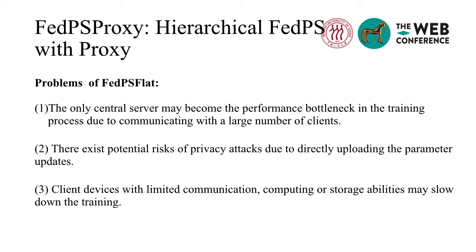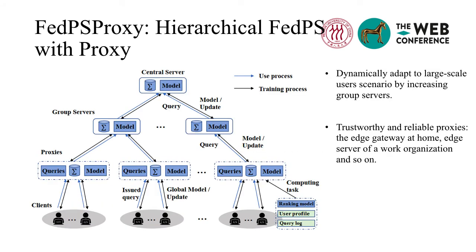Second, there exist potential risks of privacy attacks by indirectly uploading the parameter updates to the server. Third, client devices with limited communication, computing, or storage abilities may slow down the entire training process. We address the above issues by introducing proxies and group servers to improve the flat FAPIAS into a hierarchical structure. Group servers are set to relieve the communication pressure. This structure can dynamically adapt to large-scale user scenarios by increasing group servers. In addition, the clients access the server through a trustworthy and reliable proxy for privacy protection. We set proxies at the safe edge gate at home, edge server of a work organization, and so on.